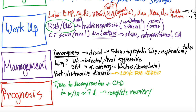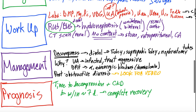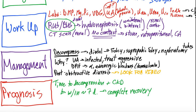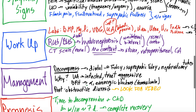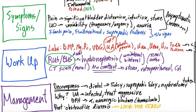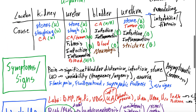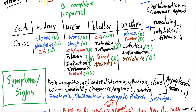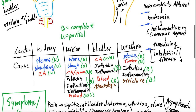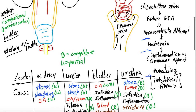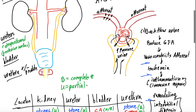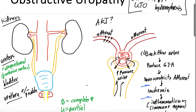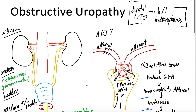That's all for today on obstructive uropathy — specifically distal urinary tract obstruction causing bilateral hydronephrosis and acute kidney injury. I hope that was helpful. Let us know your thoughts, questions, and comments below. Check out the case conference to see the original case that sparked this discussion. Don't forget — post-obstructive diuresis is coming in a future video. Thanks, and see you next time.